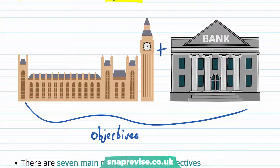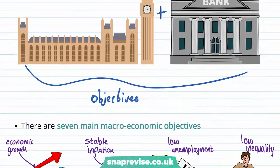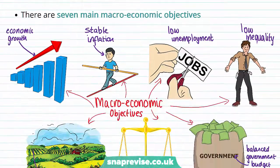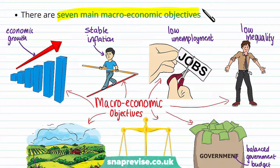We're going to see how both the government and the central bank can use government policy measures in order to achieve these objectives. But the first step is to identify our objectives, and there are seven main macroeconomic objectives that we have to think about.